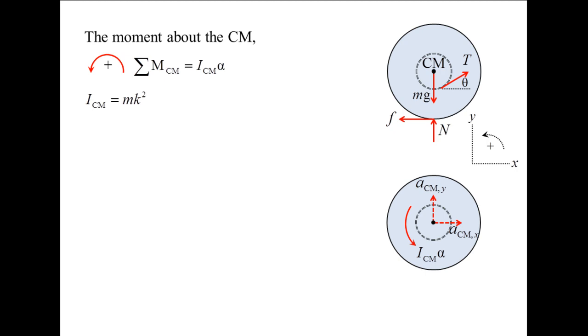Next, we determine the moments of the external forces about the center of mass. The tension produces a positive moment and has a moment arm of R1. Friction produces a negative moment and has a moment arm of R2. The weight and normal force produce no moment because their moment arms are zero. We now have equation number three.